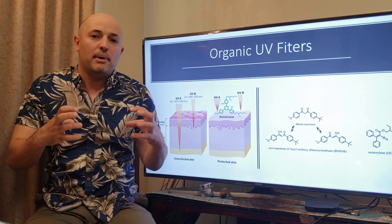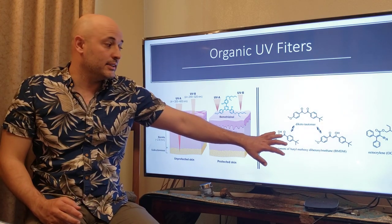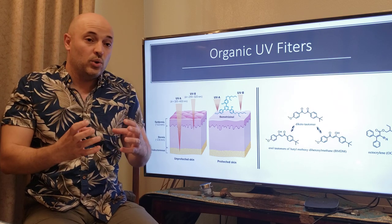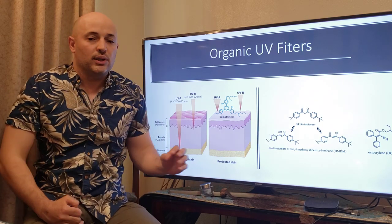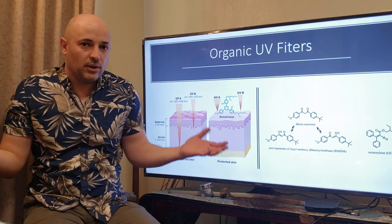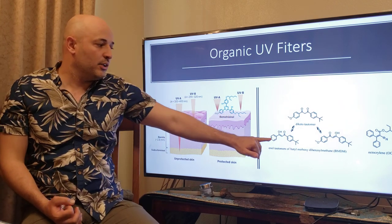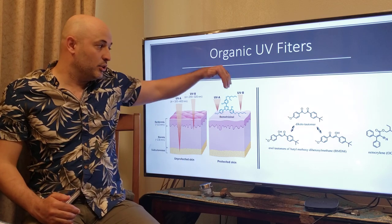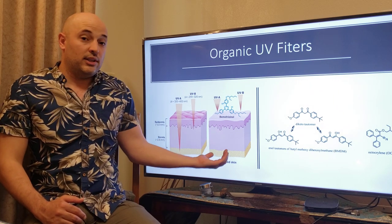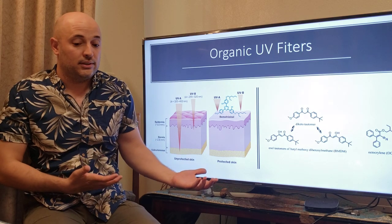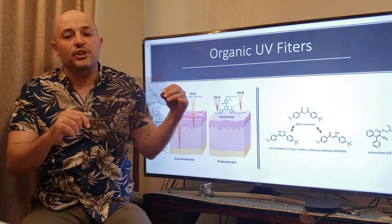Organic UV filters have an aromatic structure — they contain benzene-like rings. When UV light hits the organic UV filter molecules, it breaks the bonds of each molecule and releases its energy, so UV radiation cannot penetrate to human skin. The UV filter layer on the skin surface absorbs the UV light and protects us.